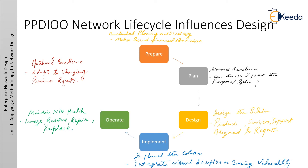The next phase is the Operate phase. Operation is the final test of the design's appropriateness. The operate phase involves maintaining network health through day-to-day operations, which might include maintaining high availability and reducing expenses. The fault detection and correction and performance monitoring that occurs in daily operation provide initial data for the network life cycle's Optimize phase.